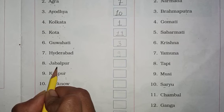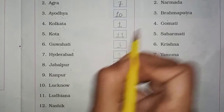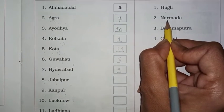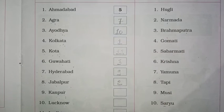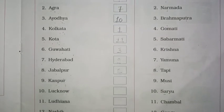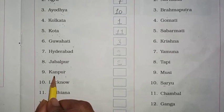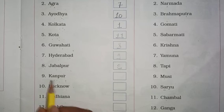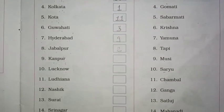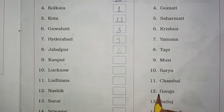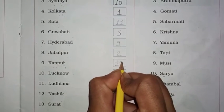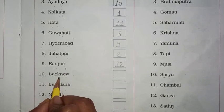Then 8, Jabalpur — कौन सी river के पास आया हुआ है — नर्मदा. तो यहाँ पे 2 number पे देखो — नर्मदा. यहाँ पे हम 2 लिखेंगे। Then 9, Kanpur — कौन सी river के पास आया हुआ है — Ganga. तो यहाँ पे Ganga देखो — 12 number. यहाँ पे हम 12 लिखेंगे।